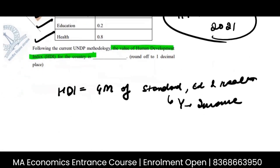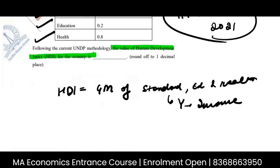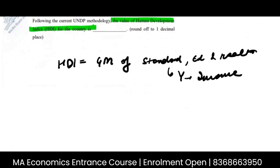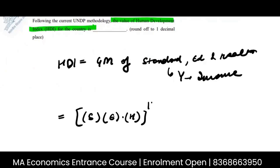Very simple. I will set up the calculation as: standard of living into education into health, to the power 1 by 3. That's the geometric mean.